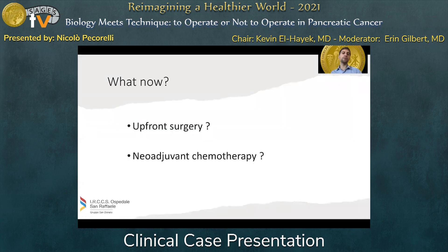So what would you guys do now? Who would go for upfront surgery, and who would go for neoadjuvant chemotherapy? And if you're going for neoadjuvant, would you choose a specific regimen in this patient? I'll let you guys discuss.